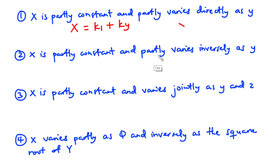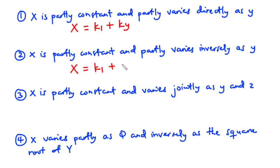For case two, x is partly constant and partly varies inversely as y. So here we have x equals k1 plus k divided by y, because x varies inversely as y. Now let's move on to the third one.